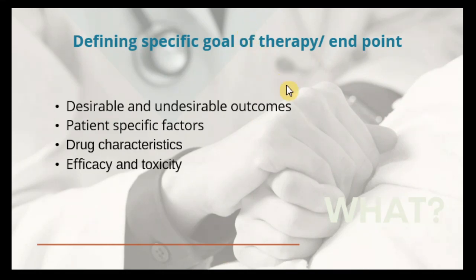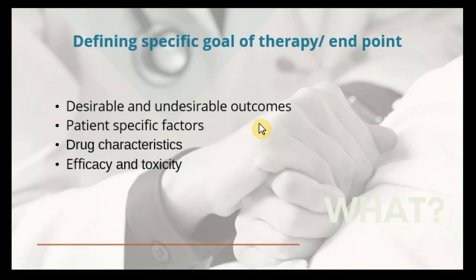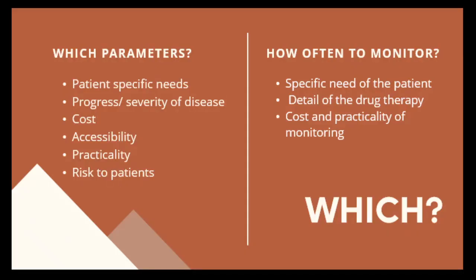When defining specific goals of therapy or endpoints, you need to know what are the desirable and undesirable outcomes from the therapy so that you can determine what to monitor. Patient-specific factors may also affect what you want to measure as a goal of therapy or endpoint, along with the drug's characteristics, efficacy, and toxicity. The monitoring parameters or testing required during follow-up depend on the patient's specific needs, the medications they are taking, any concurrent medical illness, and the progress or severity of the disease.